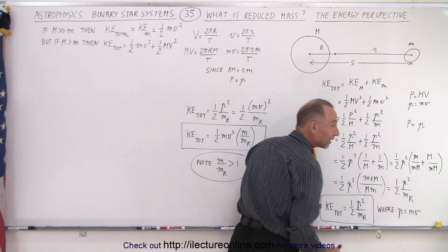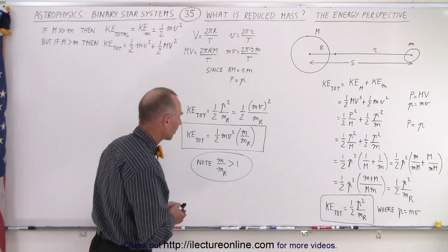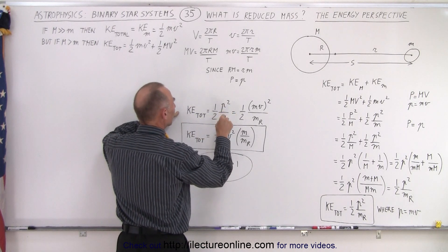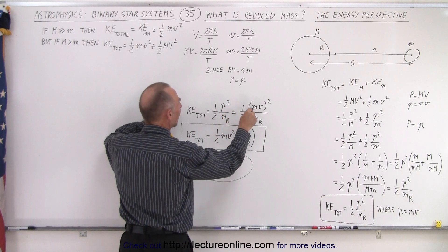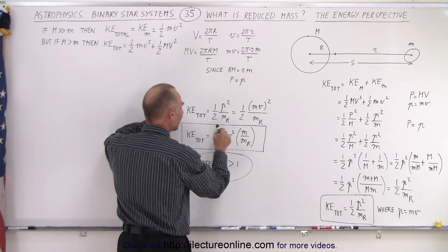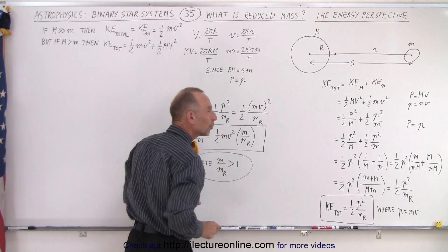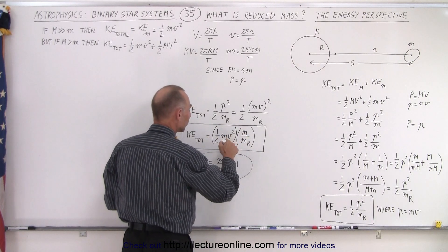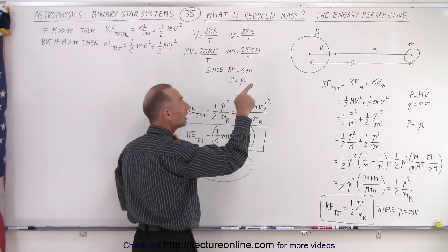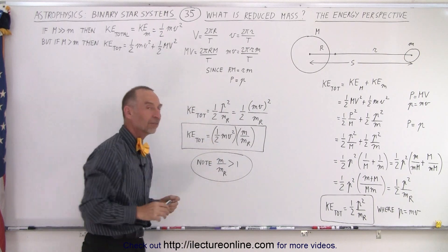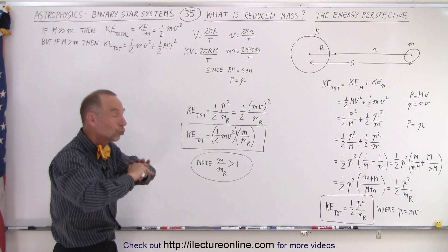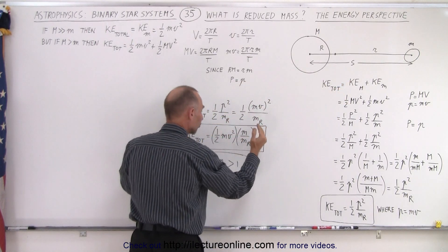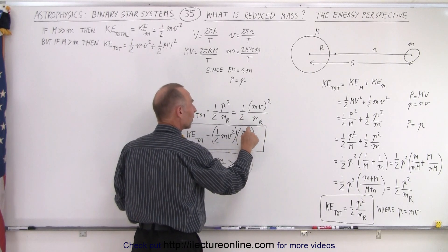Noting that p = mv, this hasn't changed. Why is this so interesting? The total kinetic energy is ½p²/μ = ½m²v²/μ = ½mv² × (m/μ). Here m is the mass of the small object, so ½mv² is the kinetic energy of the small mass. But this is no longer the total kinetic energy — that is only the kinetic energy of the small mass.